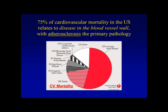Importantly, cardiovascular disease — these are statistics from the United States — 75% of it relates to disease in the blood vessel wall, with atherosclerosis as the primary pathology. The dominant portion is coronary heart disease, and stroke and diseases of the arteries are also important components. Atherosclerosis really is the number one cause of major mortality in the world.